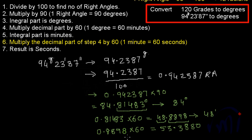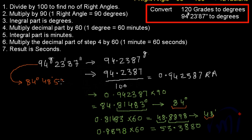So 94 grades, 23 minutes and 87 seconds can be written as 84 degrees, 48 minutes and 53.388 seconds — the trailing zero can be omitted. That's the conversion of grades into degrees. In the next video we are going to learn about sine, cos, tan, sec, cosec and cot. Keep watching MathSmart — bye-bye till then.